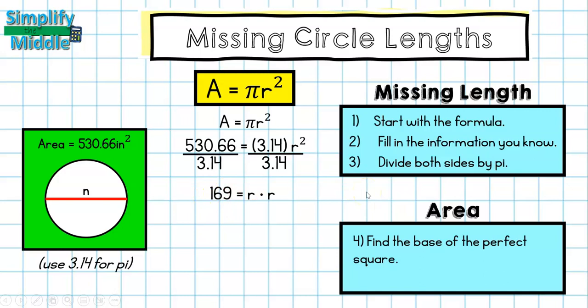So we could look at that as what is the square root of 169? Or if we haven't talked about square roots yet, we can just say what times itself equals 169? Well, I know that 13 times 13 is 169, so that means that r must be 13.